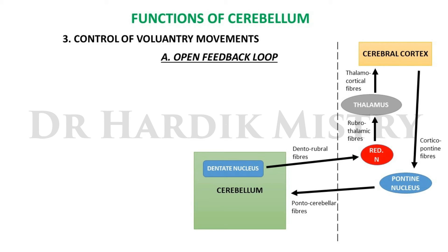The corticocerebellum controls smooth performance of highly skilled voluntary movements using two feedback loops. The open feedback loop, called the cerebro-cerebello-cerebral connection, includes the cerebro-pontocerebellar tract formed by corticopontine fibers ending in ipsilateral pontine nuclei. Cerebellar fibers from the pontine nuclei pass through the middle cerebellar peduncle of the opposite side and terminate in the lateral zone of the cerebellar hemisphere — the whole pathway is called the cerebello-pontocerebellar tract.